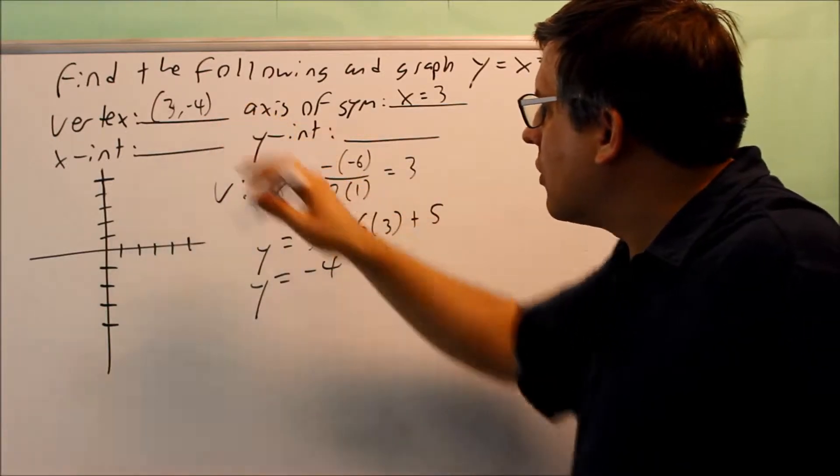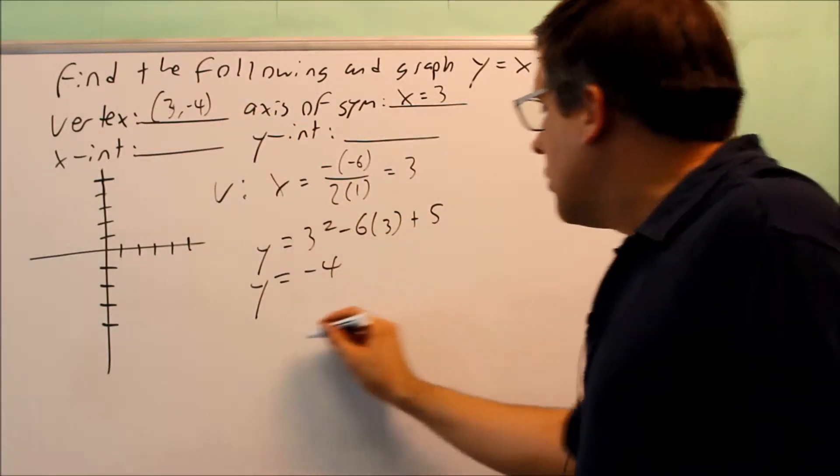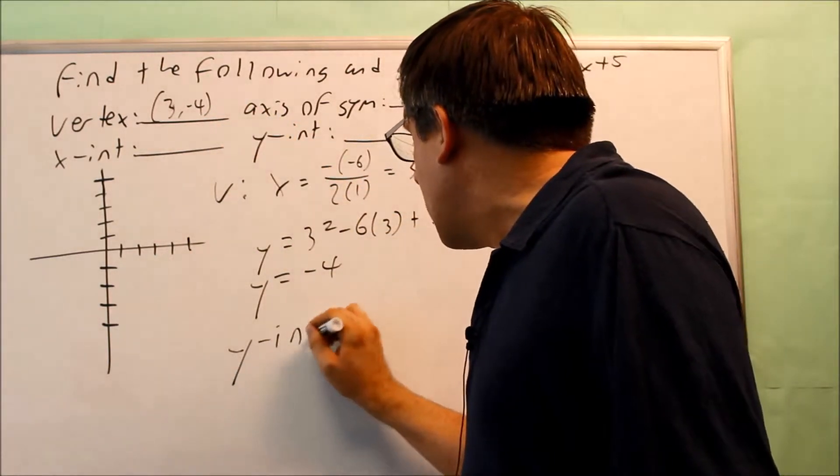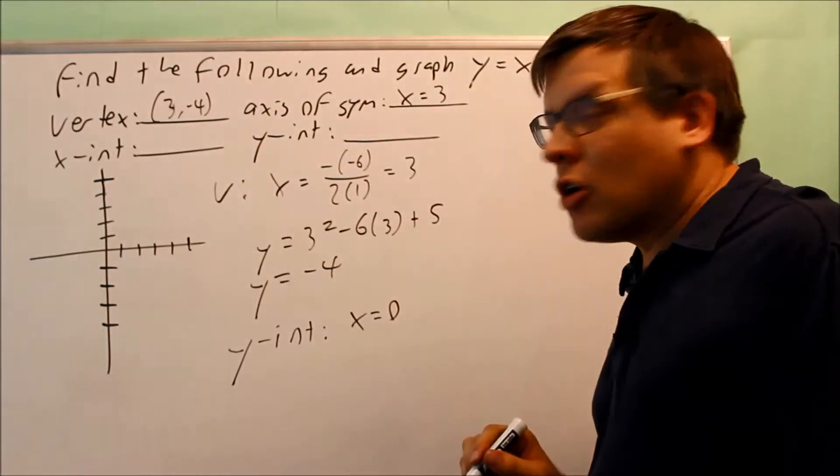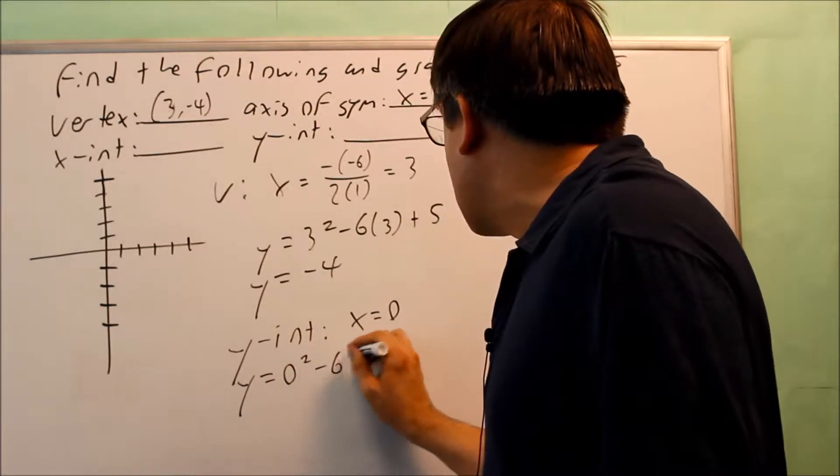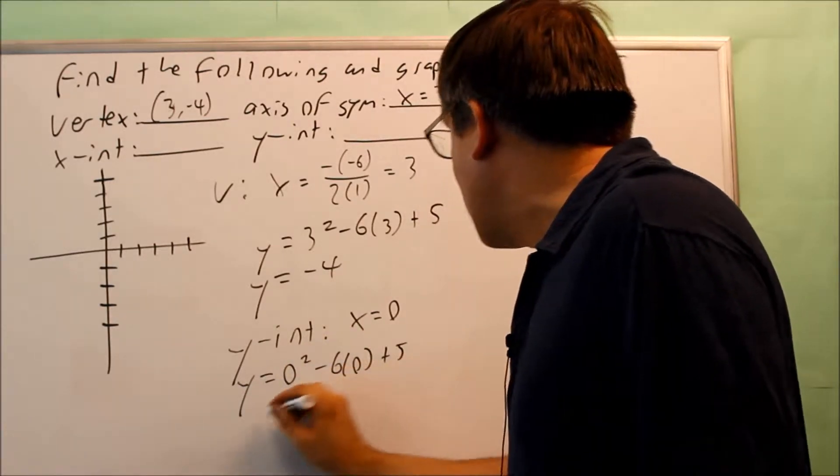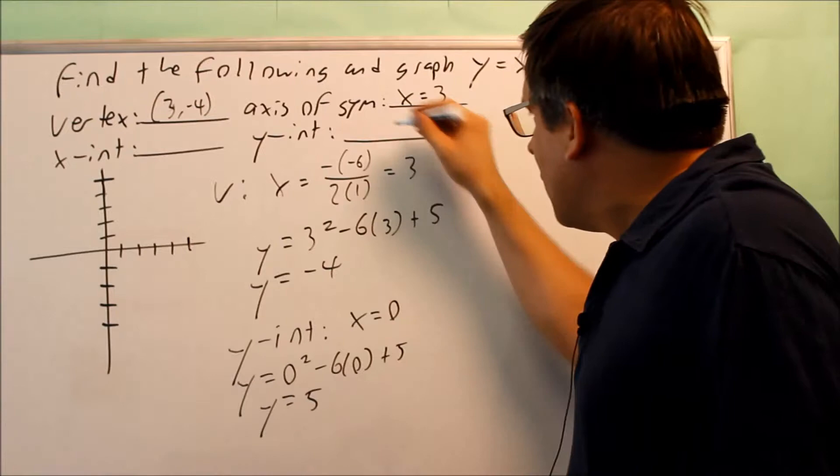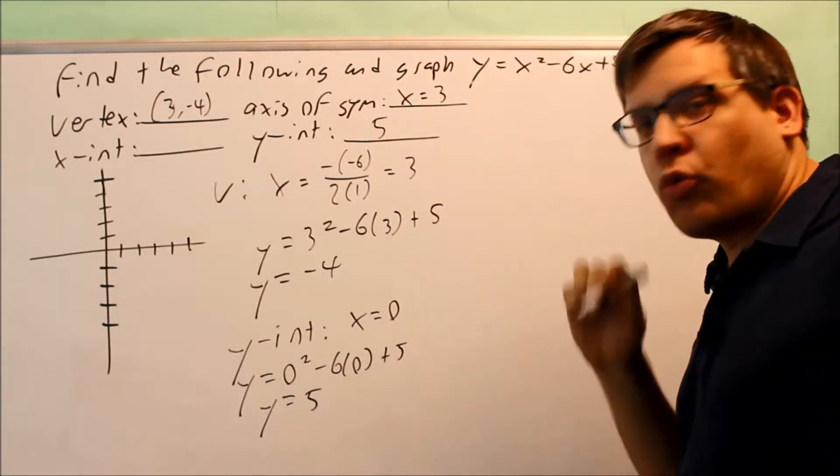Now we want to find the intercepts. I'll do the y-intercept first down here. Y-intercept is where you put in a 0 for x. So if I do that, I get 0 squared minus 6 times 0 plus 5, and I get y equals 5. So now I have another point on my graph.